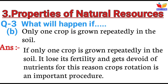Question number 3B: Only one crop is grown repeatedly in the soil. Answer: If only one crop is grown repeatedly in the soil, it loses its fertility and gets devoid of nutrients. For this reason, crop rotation is an important procedure.